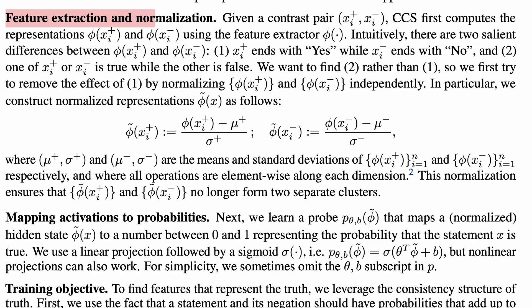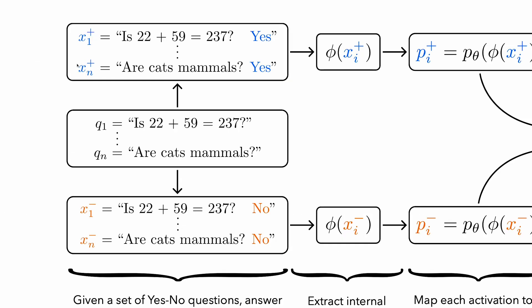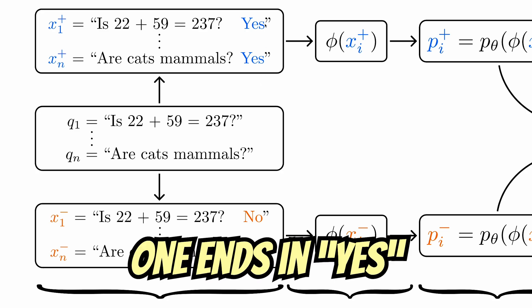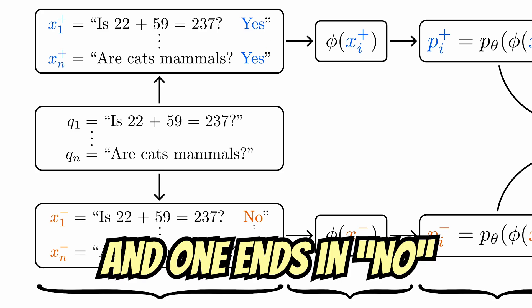The first relates to feature extraction and normalization. Think about what is different between these two sets of statements. One difference, the exciting one we care about, is that exactly one is true and one is false. The second difference, the less exciting but more obvious one, is that in each pair,